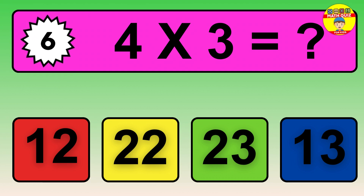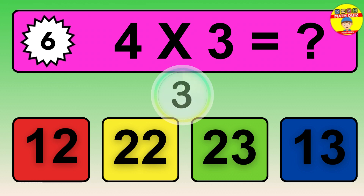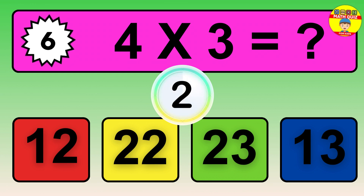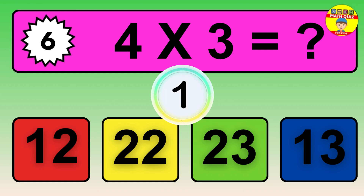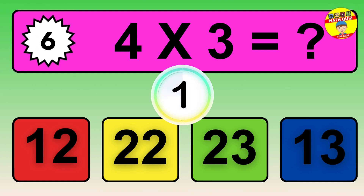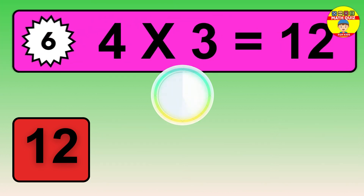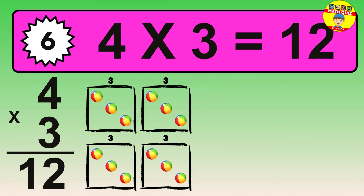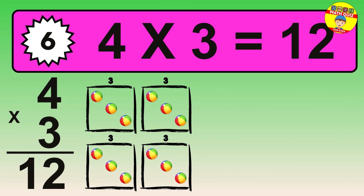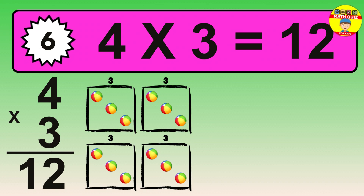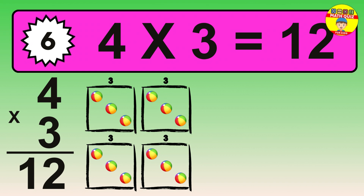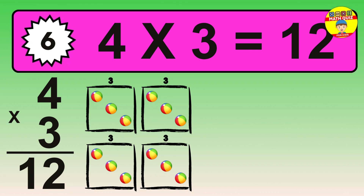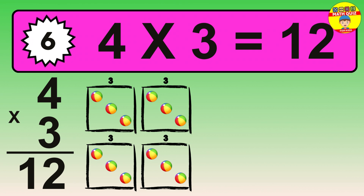Question 6. 4 times 3 equals what? The answer is 4 times 3 is 12. To calculate, we have 4 groups with 3 balls each one. So, how many balls do we have? 12 balls.